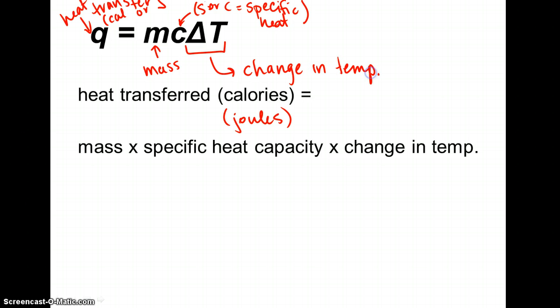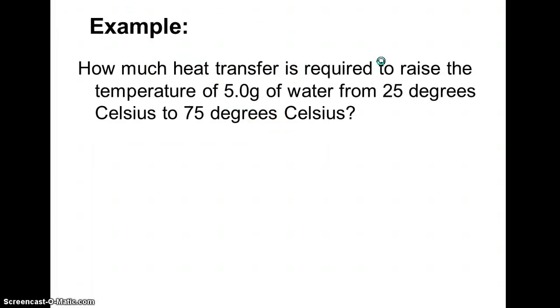With this equation, we can do any sort of calculation. I'm going to go through three different examples of how we can use this equation to calculate certain quantities. The first example: how much energy is transferred to raise 5 grams of water from 25 degrees Celsius to 75 degrees Celsius? We're going to start with our equation. Q is transfer of energy, then we have m, and I will use c and delta T.